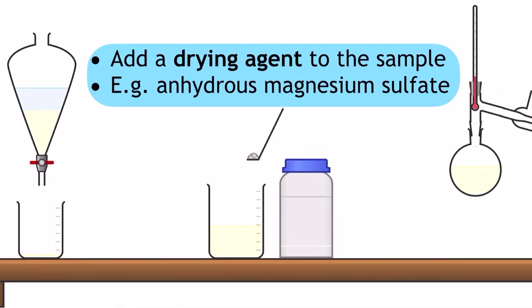Once you've got your sample, you need to add a drying agent and be specific. I'd recommend learning anhydrous magnesium sulfate here, but you could also suggest anhydrous calcium chloride if you check your spec.